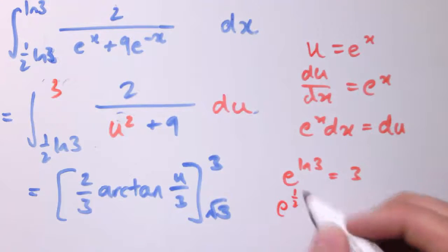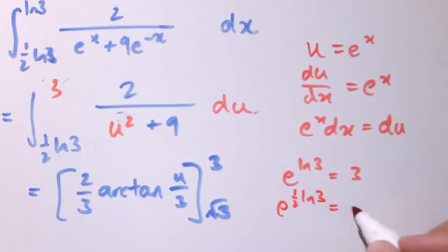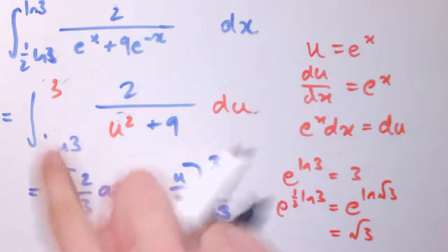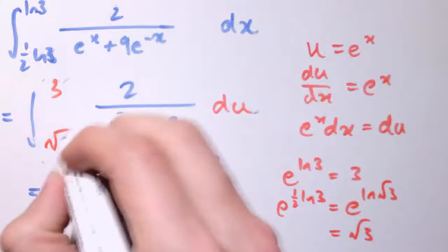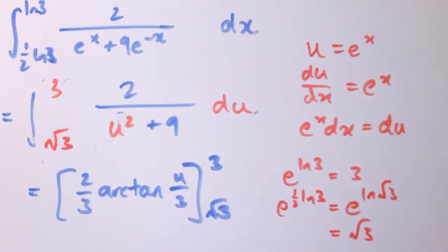And similarly, for the bottom limit, e^(1/2 ln 3). Well that's e^(ln √3) which is the square root of 3. So that limit there in u becomes the square root of 3.